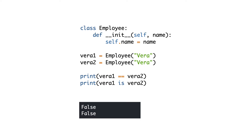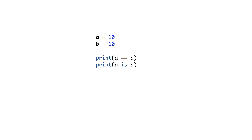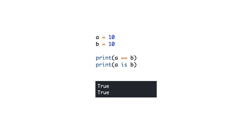You might say this is correct because there are two different variables — surely they are not the same things. Now look at this code. Here you see the same comparisons with integers. What do you think is the result now? That is strange — both comparisons return true. There must be a difference between an integer and your custom class, and of course there is.